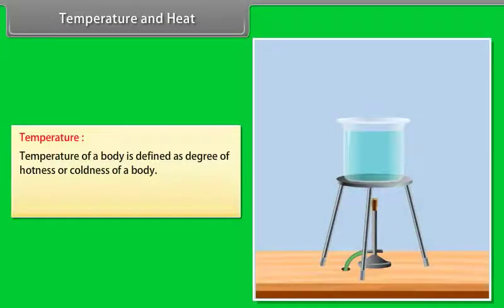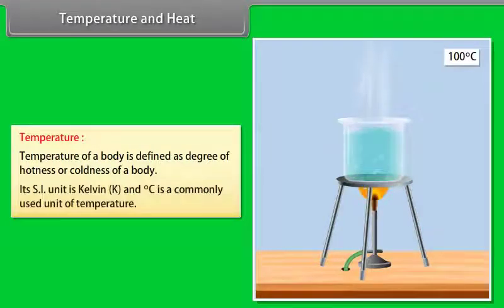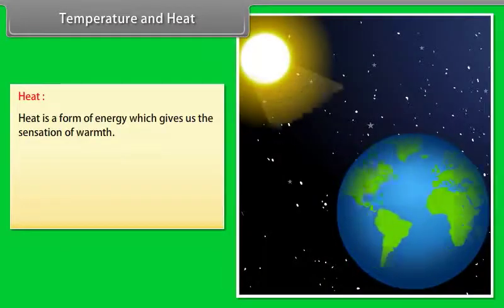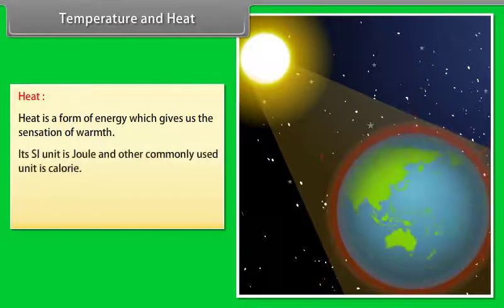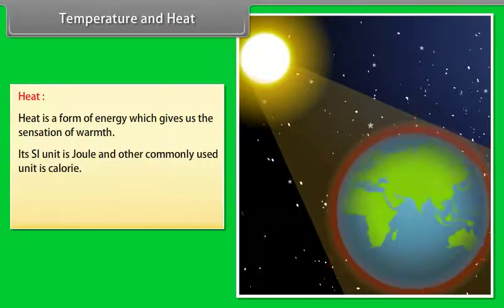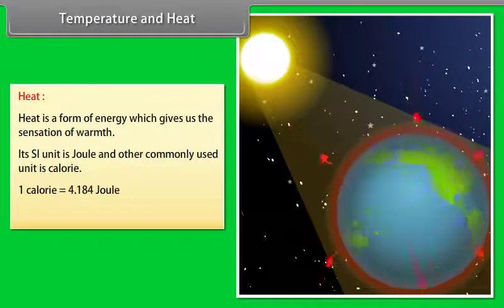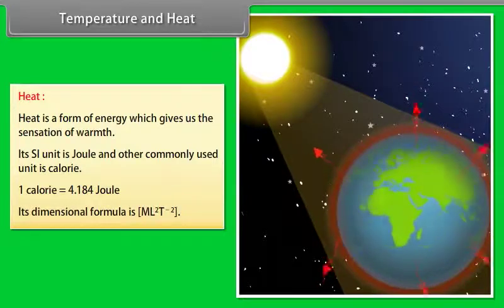Temperature of a body is defined as the degree of hotness or coldness of a body. Its SI unit is Kelvin, and degree Celsius is a commonly used unit. Heat is a form of energy which gives us the sensation of warmth. Its SI unit is Joule, and another commonly used unit is calorie. One calorie is equal to 4.184 Joule. Its dimensional formula is ML²T⁻².